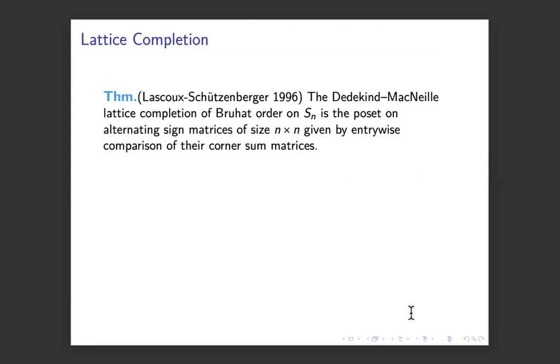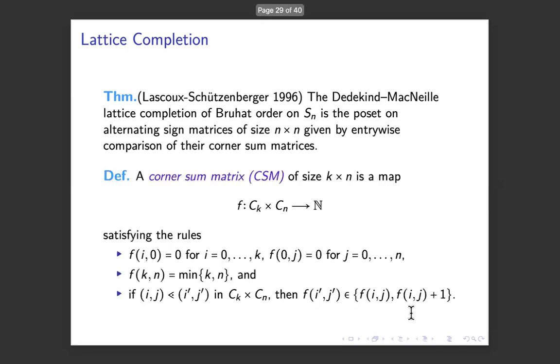And Lascoux and Schützenberger pointed out that if you take Bruhat order and you ask what's the smallest possible lattice that contains it, that's called the Dedekind-MacNeille completion, that poset is actually the same as the alternating sign matrices. And then you use the poset on alternating sign matrices where you just use the corner sum matrices and you compare entry by entry.